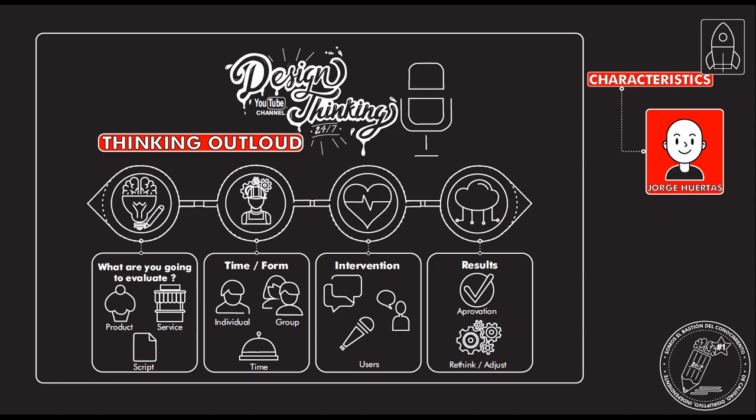After everyone has talked about their interaction and the process, you will have the results. Basically, you will have two scenarios. The first one is approval — it means that everything is alright and you can keep going. But the other one is to rethink and adjust, meaning that you have found some very important issues and you need to change, rethink, and adjust.